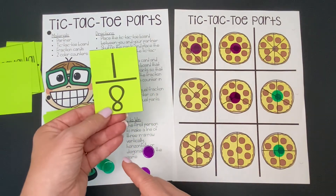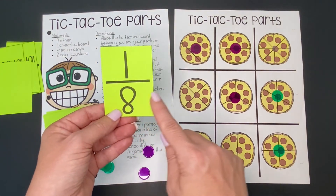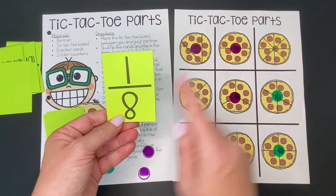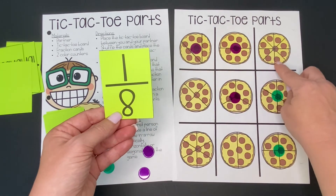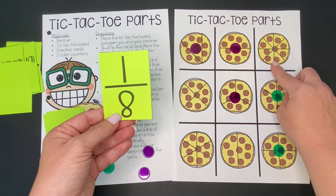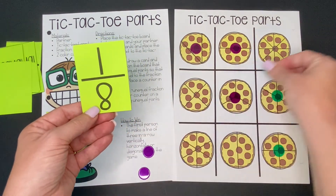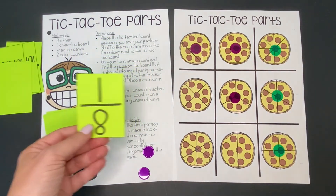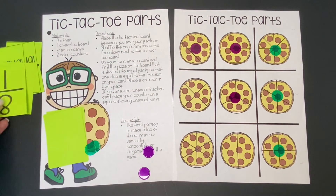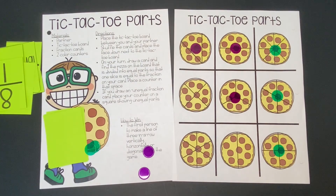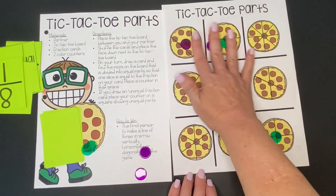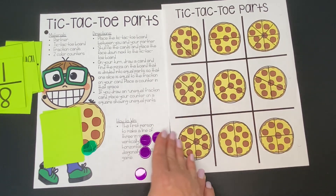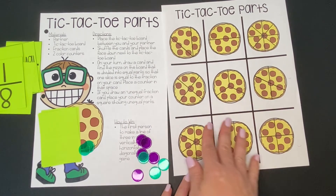Look what our partner drew — one eighth! So they're looking for a pizza divided into eight pieces. That's this one, and one slice of it would be one eighth of the pizza. If they put their green counter here — three in a row! Our partner won that tic-tac-toe round. That's okay because we have time to play again, so we'll just clear the board and start over. This time you get to play on your own — have fun!